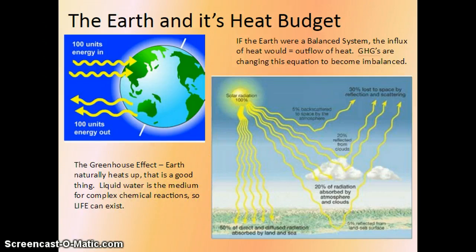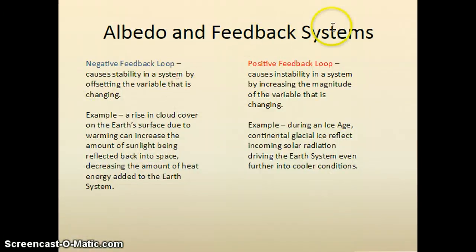So there becomes a situation where we're talking about feedback loops and feedback systems. We have negative feedbacks and we have positive feedbacks. And I think that the names are actually kind of misnomers. They're misnamed. Because a negative feedback is often something that causes stability in a system. It offsets the variable that is changing. In other words, I often consider negative feedbacks, typically they're pretty positive outcomes.